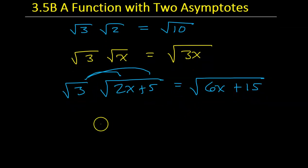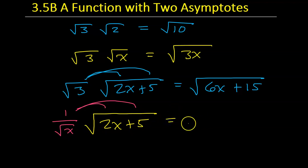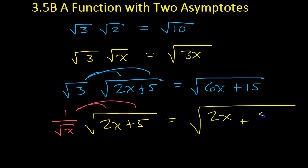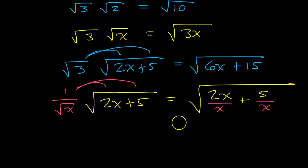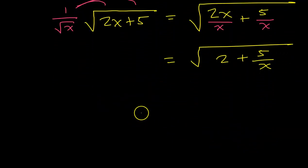Hold that in your mind. What if I had the square root of 2x plus 5, but I wanted to multiply it by 1 over the square root of x? Again, I could do the distributive property — both of these are radicals, so there's nothing stopping me. Because it's 1 over the square root of x, I'm going to wind up dividing by x, which would give me the square root of 2 plus 5 over x. A skill like this is going to come in handy very shortly.